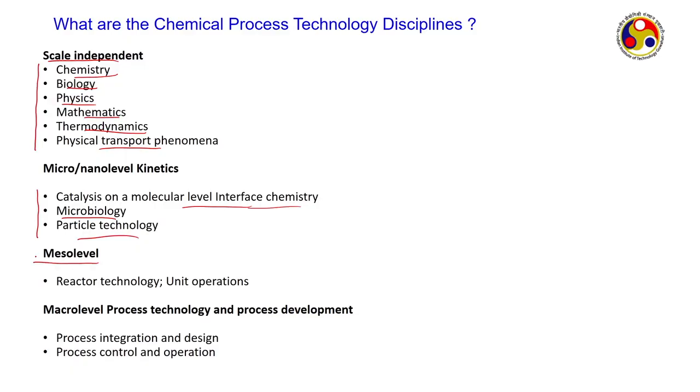The meso level is where traditional chemical engineering operates — reactor technology and unit operations studied in chemical reaction engineering and mass transfer. Reactor technology means applying chemical engineering concepts to find out reactor volume. You pick which reactor — plug flow, CSTR, or batch — based on the reaction: whether you want to separate reactants and products, want high throughput, what is the space time, is it exothermic or endothermic. When you design the reactor, reactor volume should be minimized and selectivity maximized, but there is a trade-off — you cannot have both together.